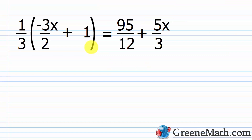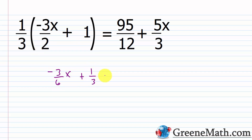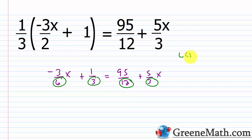For the next problem, we have parentheses involved: one-third times the quantity negative three-halves x plus 1, equals 95/12 plus five-thirds x. When clearing fractions with parentheses, clear the parentheses using the distributive property first. One-third times negative three-halves x gives negative 3/6 x, and one-third times 1 is one-third. This equals 95/12 plus five-thirds x. The denominators are 6, 3, 12, and 3, so the LCD is 12.